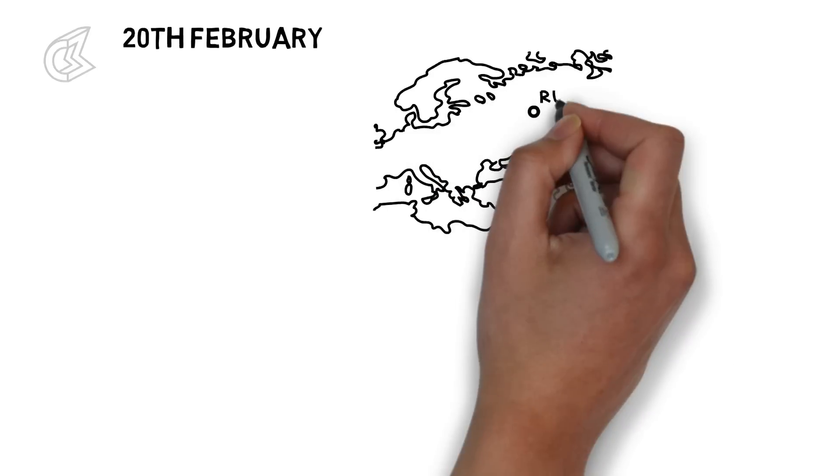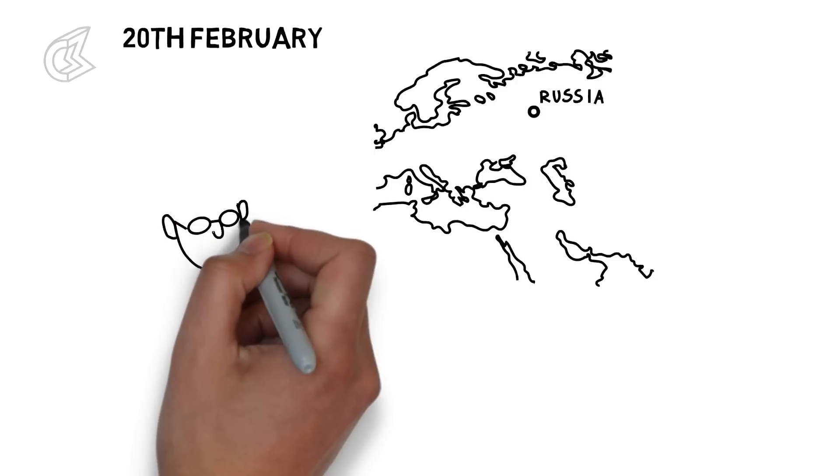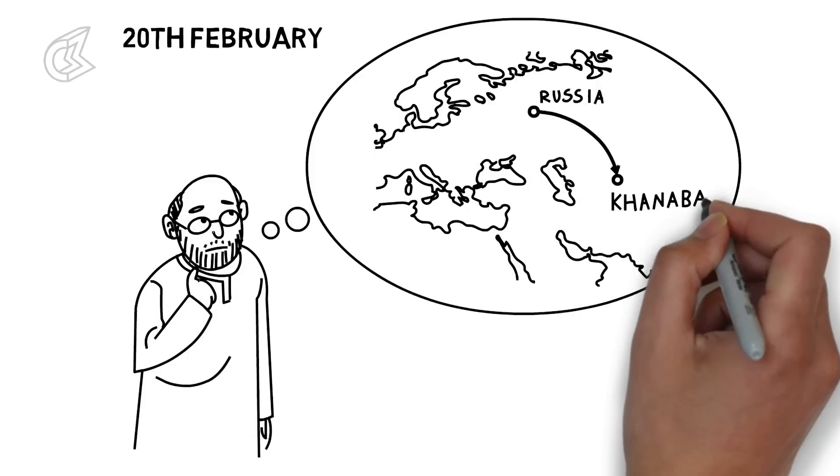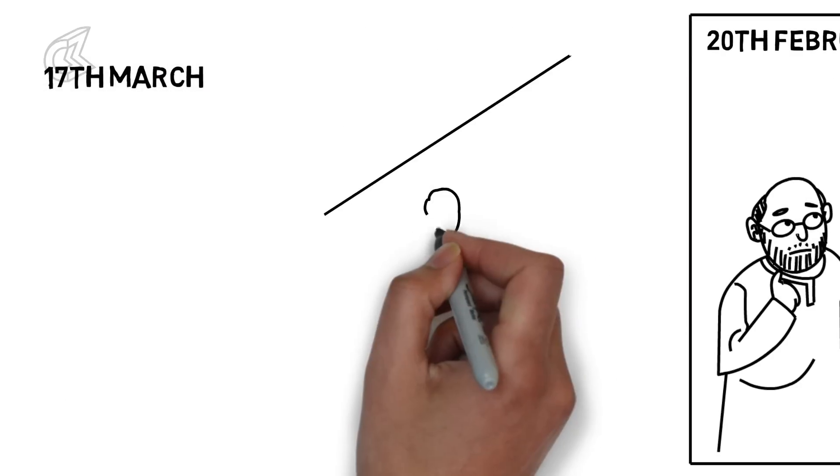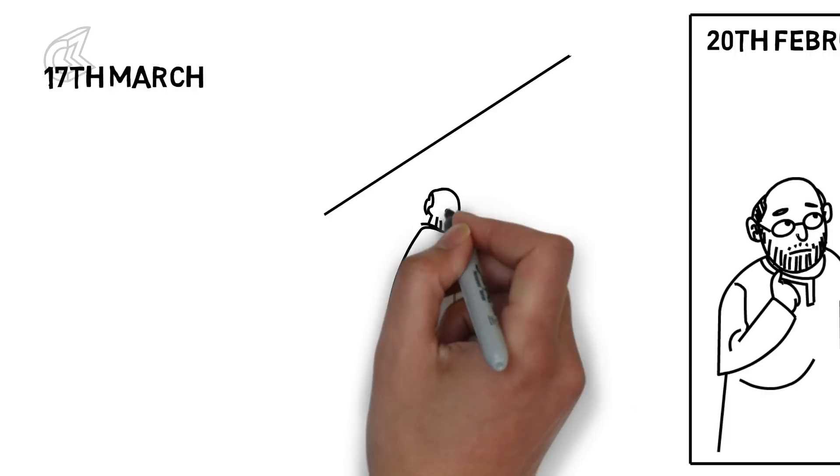A bus ticket to Khanabad is purchased for Netaji. When suddenly, a message is received from the German mission. After much persuasion, Russia finally gave its assent to issuing Netaji an Italian passport.